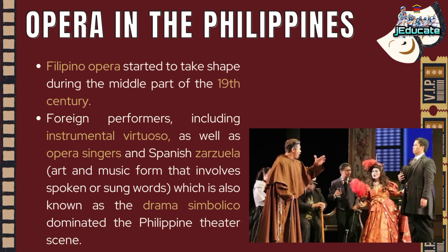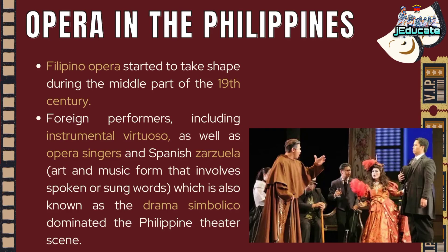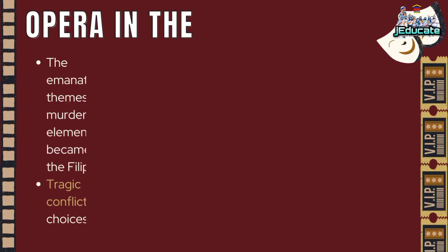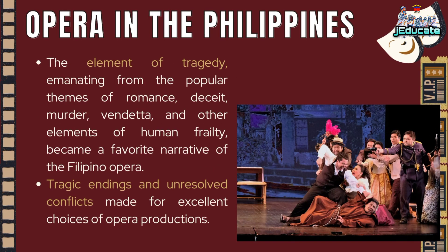Opera in the Philippines. Filipino opera started to take shape during the middle part of the 19th century. Foreign performers, including instrumental virtuosos, as well as opera singers, and Spanish zarzuela — an art and music form that involves spoken or sung words, also known as the drama symbolico — dominated the Philippine theater scene. The element of tragedy, emanating from popular themes of romance, deceit, murder, vendetta, and other elements of human frailty, became a favorite narrative of the Filipino opera. Tragic endings and unresolved conflicts made for excellent choices of opera productions.